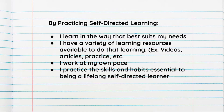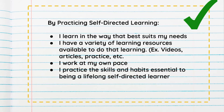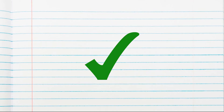To sum up: by practicing self-directed learning, I learn in the way that best suits my needs, I have a variety of learning resources available, I work at my own pace, and I'm able to practice the skills and habits essential to being a lifelong self-directed learner. That caps off the first part of our discussion. Now we're going to look at something called the self-directed learning cycle.